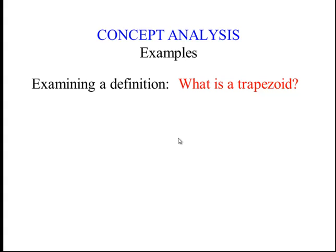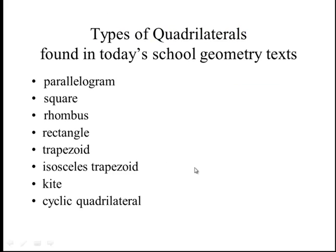He had this idea of examining what is a trapezoid and trying to define it. What types of quadrilaterals are found in school geometry texts today? Besides just a general quadrilateral, you'll see parallelograms, square, rhombus, rectangle, trapezoid, isosceles trapezoid, kite, and cyclic quadrilateral found in most high school geometry texts today.